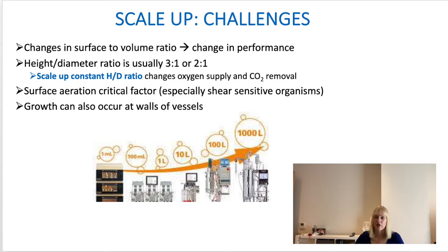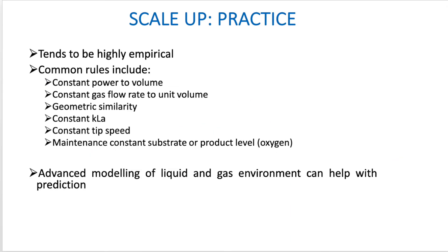Surface aeration and oxygen supply in general are critical factors to take into account when scaling up. We can approach this in different ways — in bioreactors a lot of it will be empirical, but computational tools can also be used to make predictions. There are a couple of common rules: constant power-to-volume ratio is quite often used, geometric similarity is often used, and the others are less common. You need to know at least three of them, but more importantly, we'll discuss drawbacks associated with these methods.